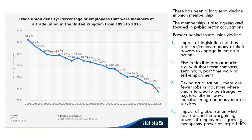The impact of globalisation has also reduced the bargaining power of employees. It's harder for a workers' union in the UK to demand higher pay when an employer can easily relocate production overseas where labour is much cheaper. Transnational companies increasingly have monopoly power in this respect.